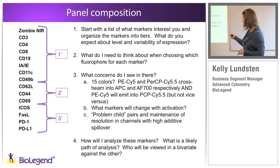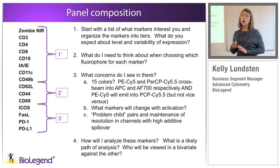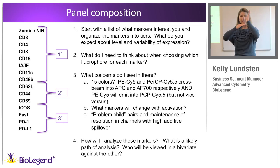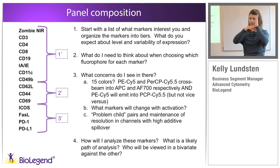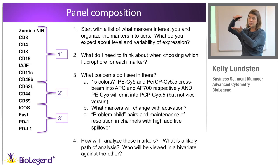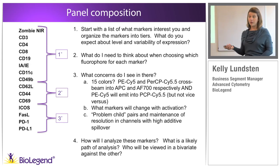Once I have all that information, the final question is how will I analyze these — the most important but also most complicated question. If you think you can do 16 colors with all co-expressed markers, it's going to be very hard. I ask myself: what is the most likely path of analysis, and which particular markers will be viewed in a bivariate together? This matters because of spreading error — spreading error is a photon miscounting error where the brighter the marker gets, the wider the distribution of the MFI positive, making it harder to delineate MFI positive from negative in double-positive populations.